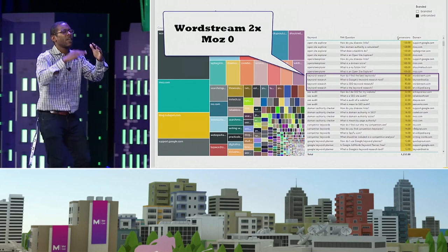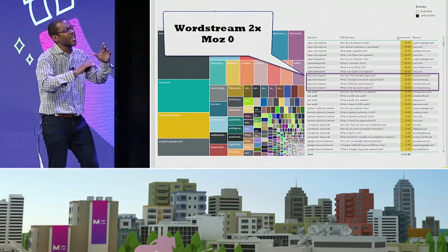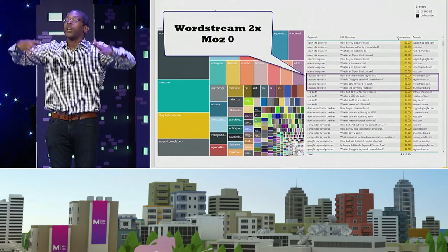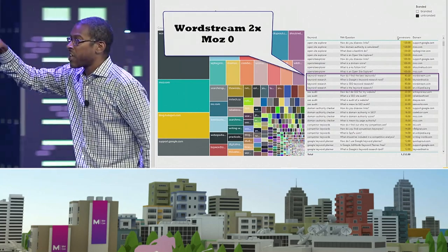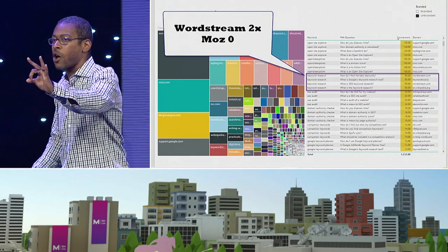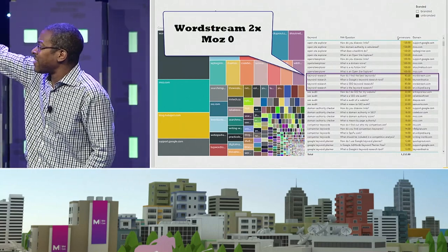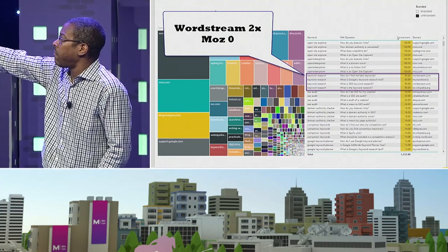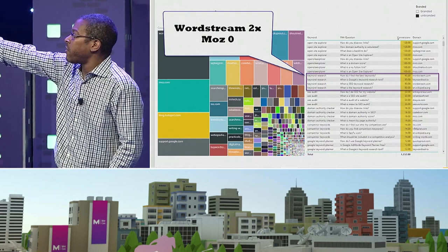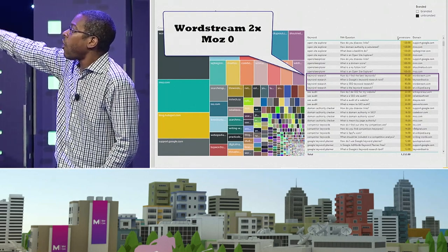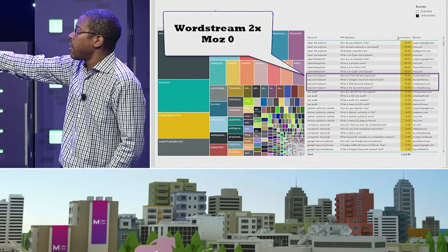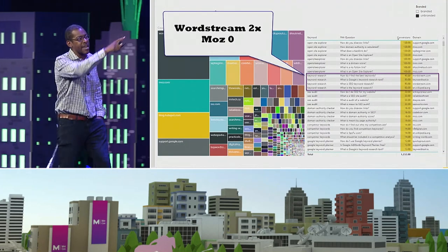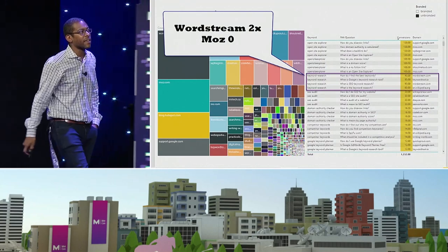Each box on my tree map represents domains that are the answer in the People Also Ask expansion, sorted by conversion value — so I'm talking to Sarah Bird about money throughout. For the word 'keyword research,' it triggers four different People Also Ask questions and Moz isn't in any of them. So when somebody searches for 'keyword research' — which drives you a lot of conversions — for all the People Also Ask questions, you don't show up. Maybe we should prioritize that.